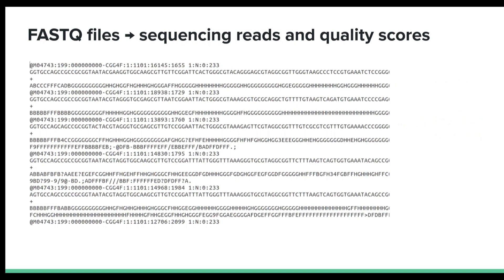Then we have FASTQ files. These are typically used to store sequencing reads generated by high-throughput sequencing technologies — for example, transcriptomic data in its raw form. Unlike FASTA files, which only contain information about the DNA or protein sequence, FASTQ files contain certain additional characteristics. Namely, FASTQ files store both nucleotide sequences and their corresponding quality scores.